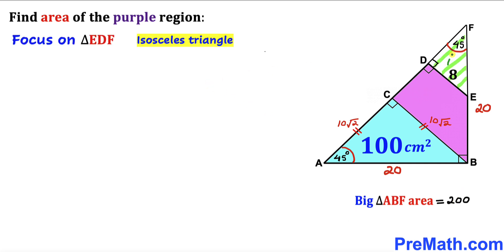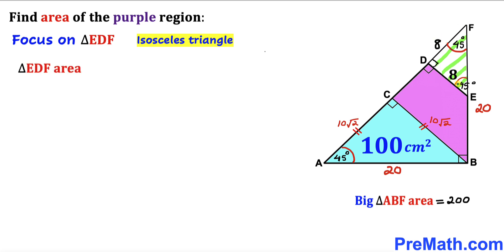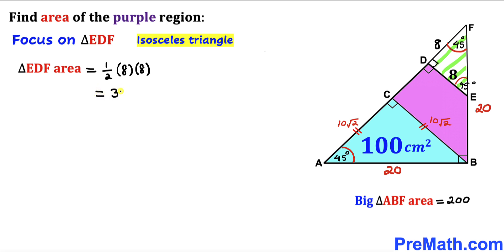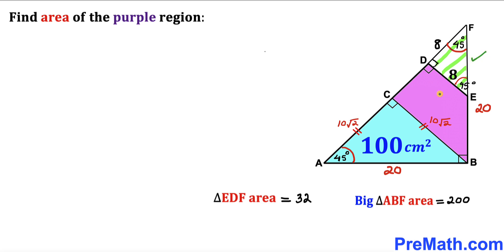Let's focus on the right triangle EDF. This angle is 90 degrees and this angle is 45 degrees, so the remaining angle must be 45 degrees as well. This means triangle EDF is also isosceles, so both legs equal 8 centimeters. The area of triangle EDF equals one half times 8 times 8, which turns out to be 32 centimeter square.